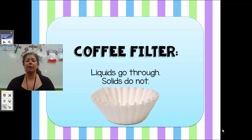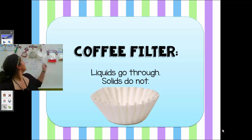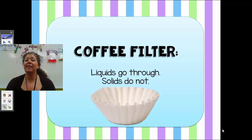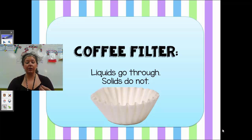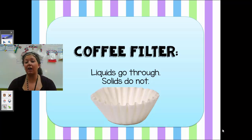The next thing we can use to help us separate our mixtures is a coffee filter. The coffee filter is going to allow liquids to go through, but the solids do not. You can see there's a coffee filter right here — if your parents have a coffee pot, they probably have some. The liquids have the ability to go through, but the solids can't because the porousness is very tiny and will only let the liquids through and not the solids.